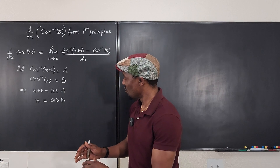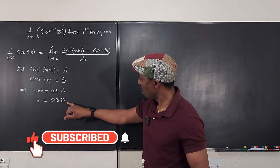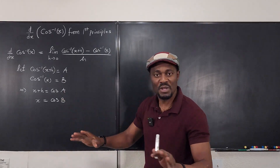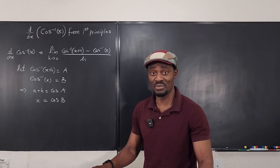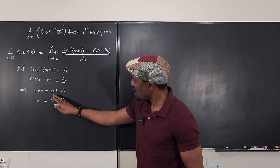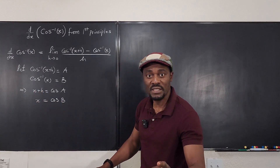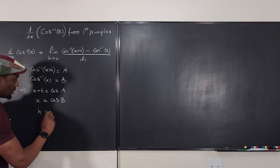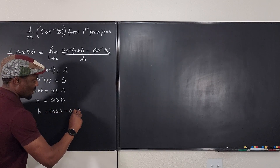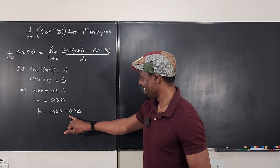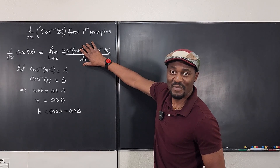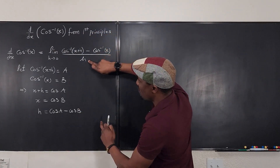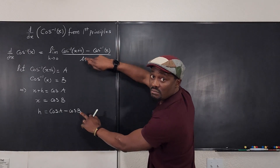We want everything to be in terms of a and b because it's easier to manipulate. How do we write x and h in terms of a and b? If I subtract the second equation from the first, h equals cosine(a) minus cosine(b). This is the key. So we're going to rewrite the limit expression: as h goes to 0, the numerator becomes a minus b and the denominator h becomes cosine(a) minus cosine(b).